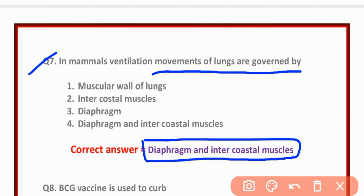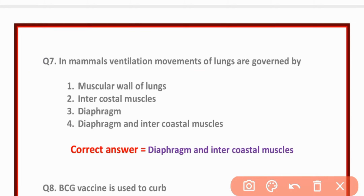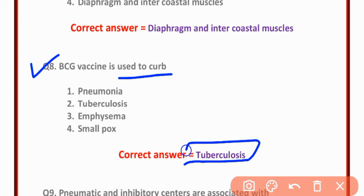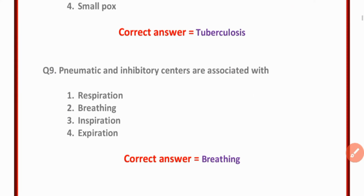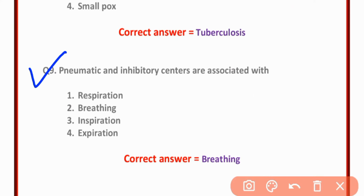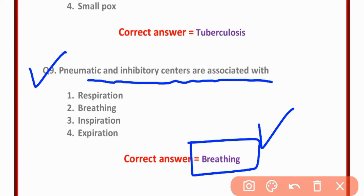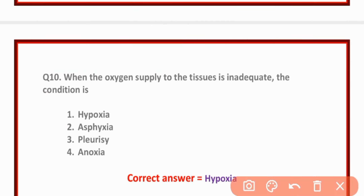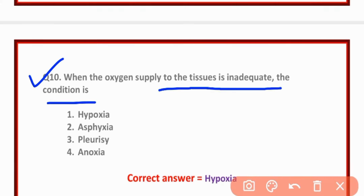MCQ number seven: In mammals, ventilation movements of lungs are governed by diaphragm and intercostal muscles — option D is correct. MCQ number eight: BCG vaccine is used to curb tuberculosis — option B is correct. MCQ number nine: Pneumatic and inhibitory centers are associated with breathing — option two is correct. MCQ number ten: When oxygen supplied to tissue is inadequate, the condition is called hypoxia — option A is correct.